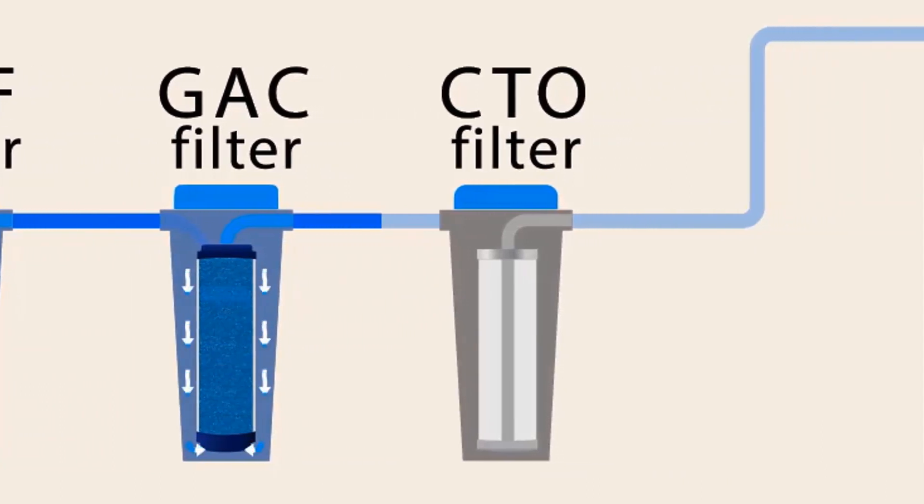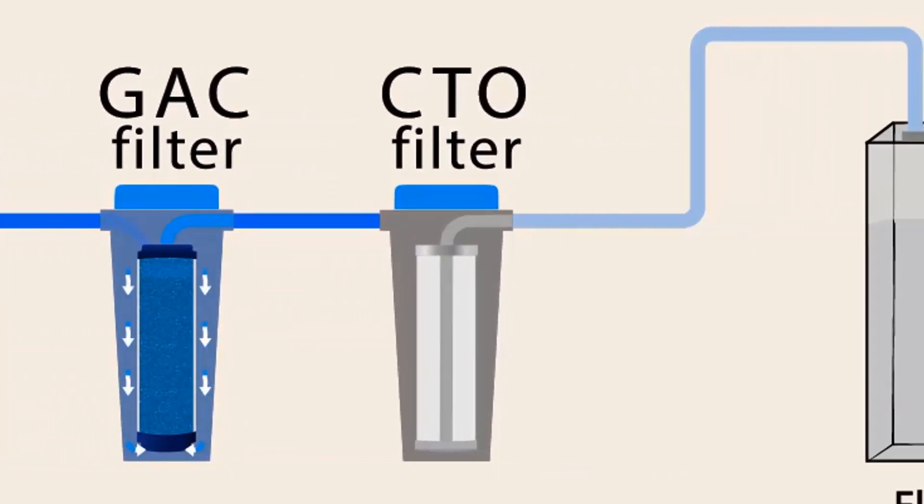Next stage is CTO filter. This filter is also called carbon block filter. There are variety of raw materials used to make CTO filters. Some of the most common material are bituminous coal, wood, and nut shell. It removes the cloudiness of water, bad taste, and odors from water.